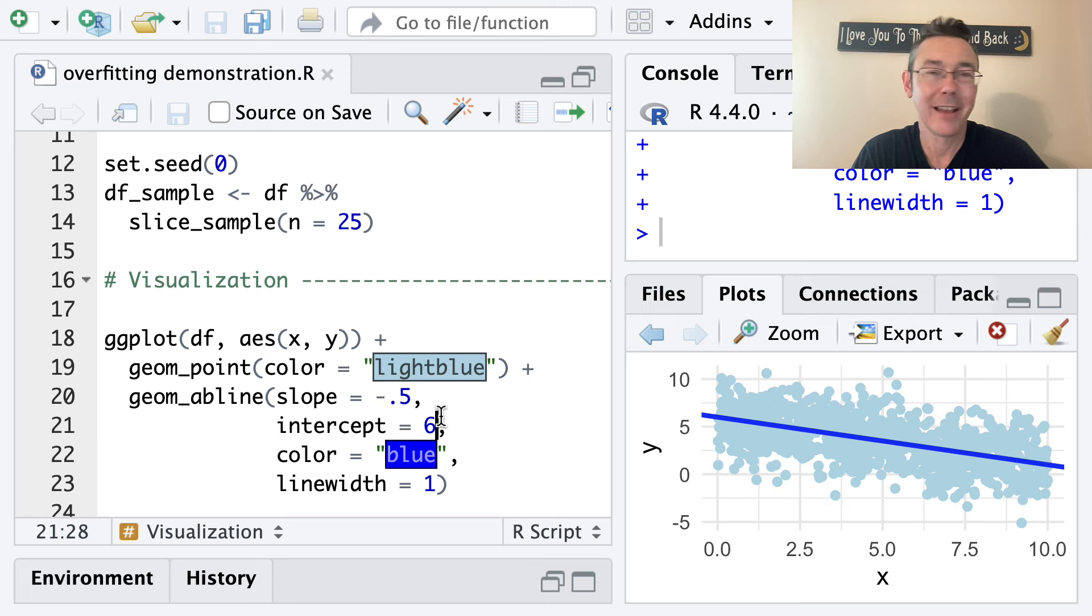If I were to do a geom_smooth with a method equals LM, it would be very close, but not actually identical. The point here is I'm trying to view this as sample data. Here I'm acting kind of omniscient, like I actually have access to all the information about the population from which I'm going to be sampling. In usual machine learning practice, this is not the case.